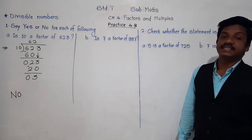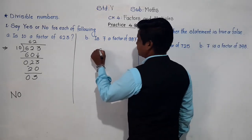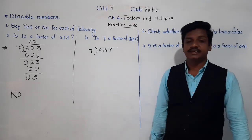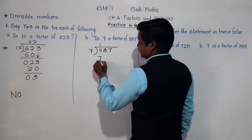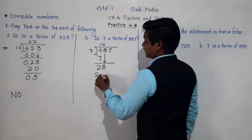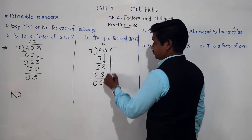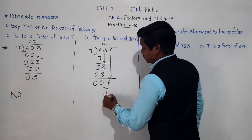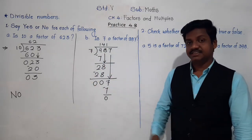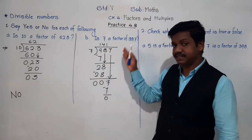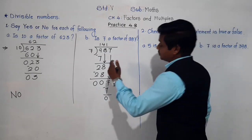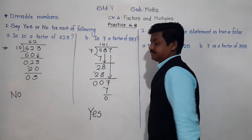Second: Is 7 a factor of 987? Again, we go the same way — we will divide 987 by 7. If we get remainder 0, then we can say yes, 7 is a factor of 987. 7 ones are 7, 9 minus 7 is 2, bring it down — we get 28. 7 fours are 28, 8 minus 8 is 0, 2 minus 2 is 0, bring 7 down — 7 minus 7 is 0. We have remainder 0. That means 7 is a factor of 987. So we answer: Yes.